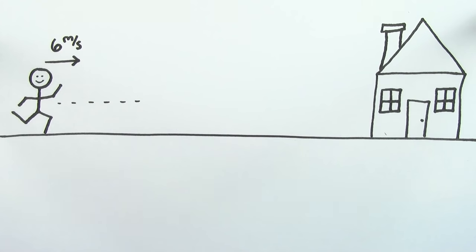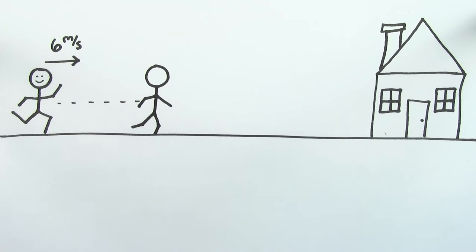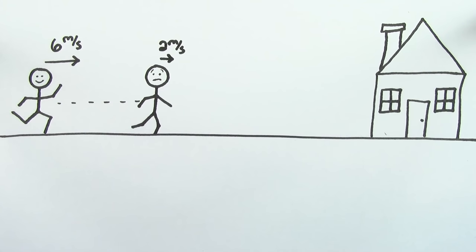You're pretty motivated to get home, so say you start running at 6 meters per second. Maybe it's been a while since the last time you ran, so you have to slow down a little bit to 2 meters per second.